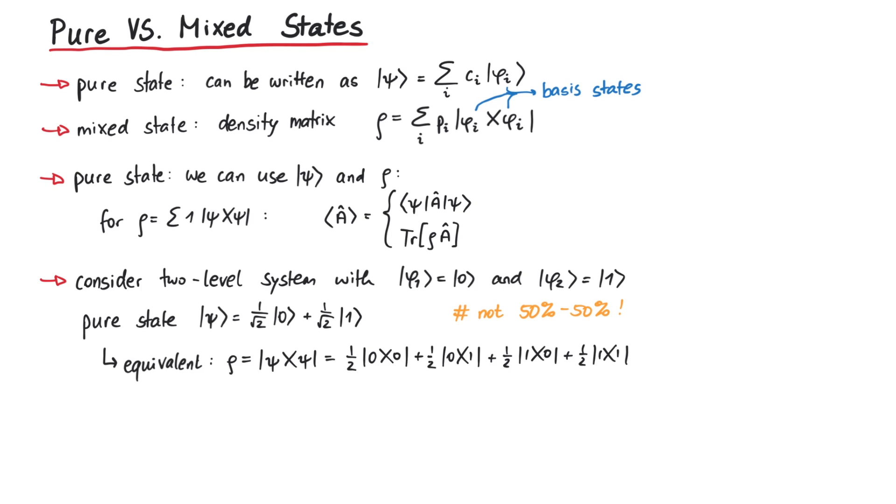As you can clearly see from the density matrix representation, if the quantum state is in such a superposition of 0 and 1, there can be interference between the 1 and 0 states. This becomes more obvious if we calculate the expectation value of an operator. Those two terms here can only arise because of interference.